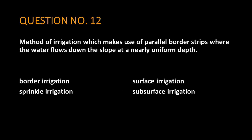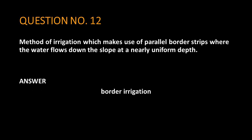Question number 12. Method of irrigation which makes use of parallel border strips where the water flows down the slope at a nearly uniform depth. The answer is: border irrigation.